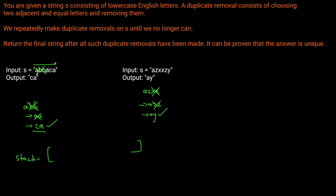The string is A, B, B, A, C, A. The first character is A — the stack is empty, so we just append it. Now we get to B: is B equal to the top of the stack, which is A? No, so we append it. Then we get the second B — it equals the top of the stack, so we pop. This is no longer there. Then we get the next A, which equals the top of the stack, which is also A, so we pop that too. Now we're at C — the stack is empty, so we just append C. Then we get the A — A does not equal the top of the stack, so we append it. We've traversed the entire string. Now we just concatenate our stack, which is serving as a string builder, and return C, A.